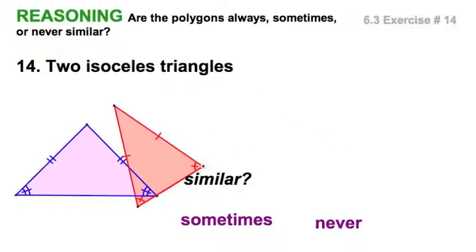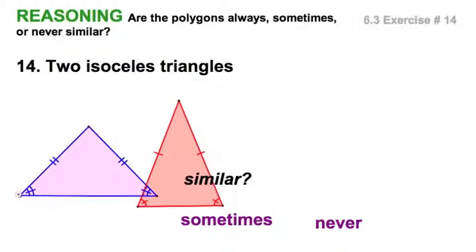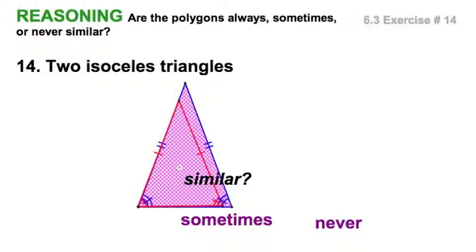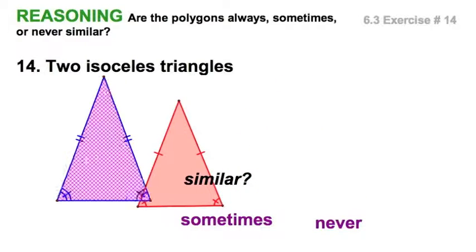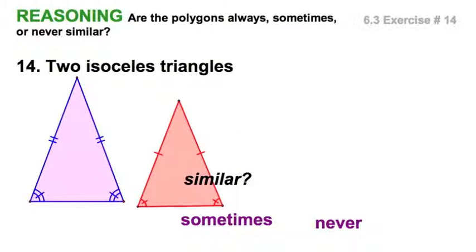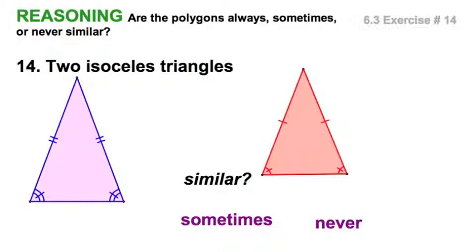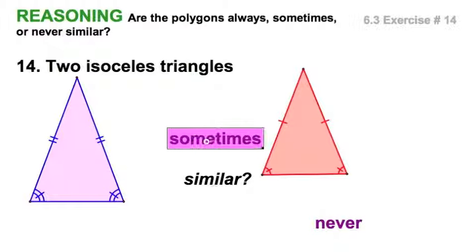I guess all I'd have to do is try to make them the same. I can do that, and as long as I can make those angles match, I think I can do it. Slightly different size but same angles. I'm going to say these two triangles, that is, isosceles triangles are similar sometimes. Go away, never.